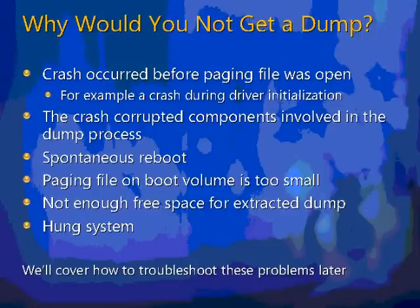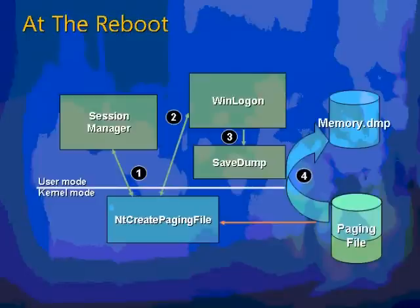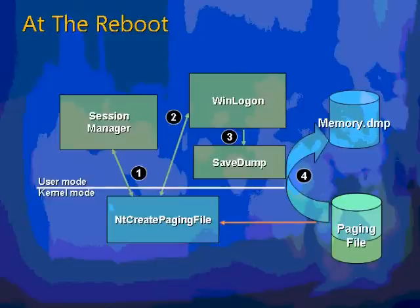At the time of the reboot, the session manager process — one of the first user-mode processes on the system — initializes paging, determines that there's a crash dump in the paging file, and marks that area as off-limits. A little bit later, Winlogon, the Windows Interactive Logon Manager, starts up, looks to see if there's a crash in the paging file, and if there is, spins off a process called SaveDump, whose sole job is to read the crash data from the paging file and write it to the target location you've specified.